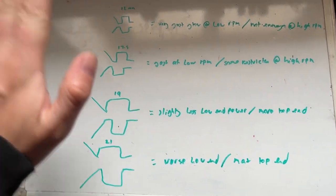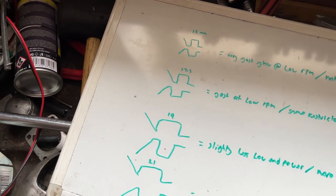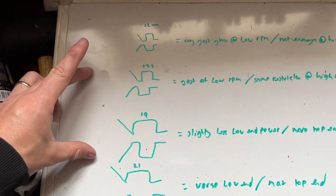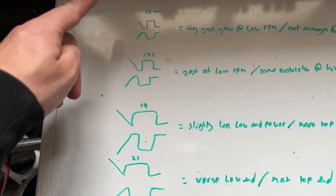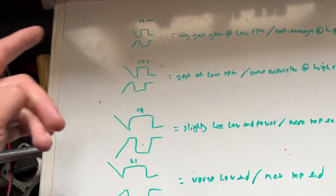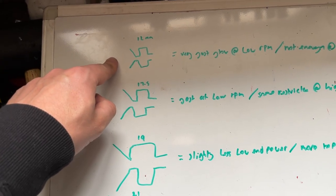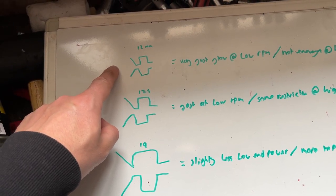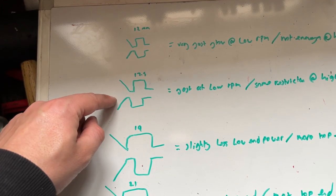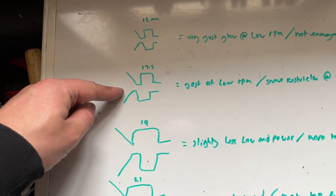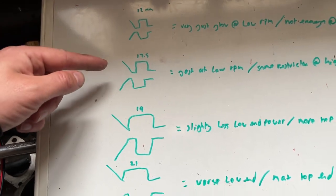So we're sticking with the example of a 50cc going to a 70cc, and I've put a number of size carburetors here which are quite commonly fitted to these kind of setups. You've got 12mm which is the smallest usually found on factory 50cc two-strokes, 17.5 which is another common factory fitted carburetor on a standard 50cc.